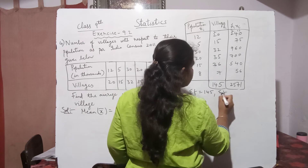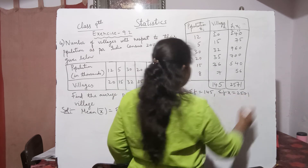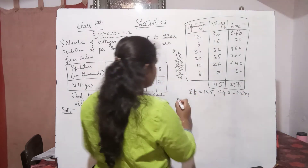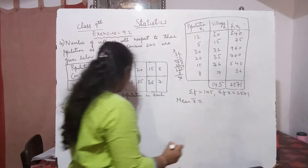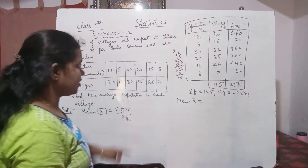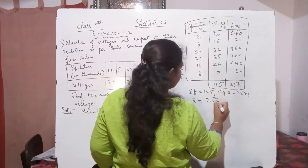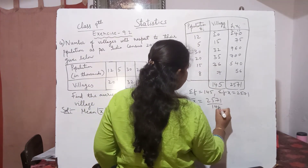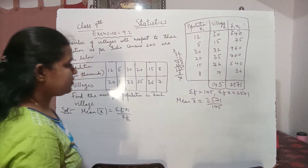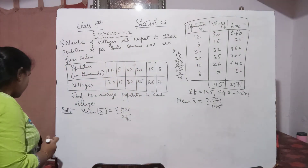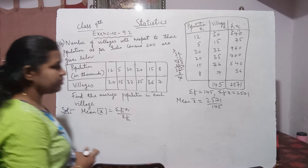Σfᵢ = 145 and Σfᵢxᵢ = 2571. Substituting into the formula: x̄ = 2571 ÷ 145.